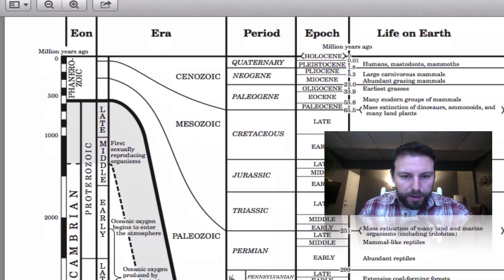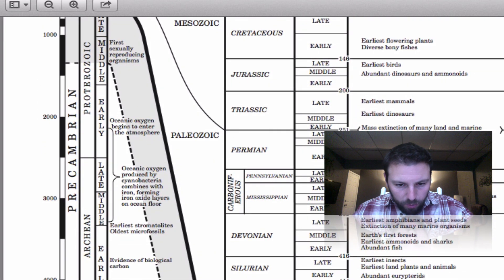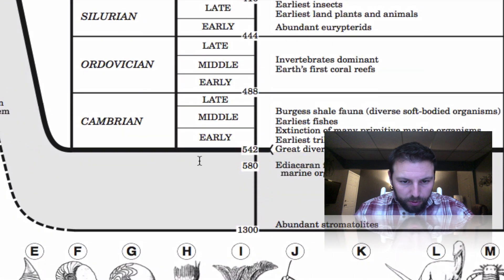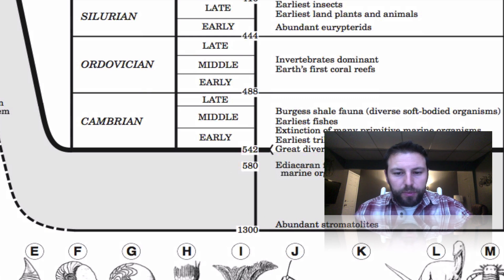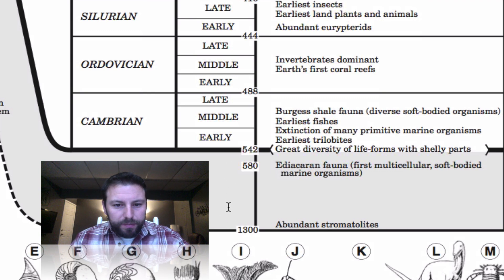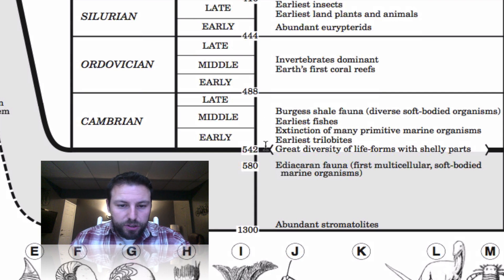Zooming out a bit — going back 1.3 billion years, we have abundant stromatolites. Moving forward, we see some soft-bodied marine organisms and then diversity of life forms with shelly parts, showing the evolution of life occurring here. From 1.3 billion years to about 542 million years ago, not much was happening, and then from that point things really started to change as we enter the Phanerozoic.